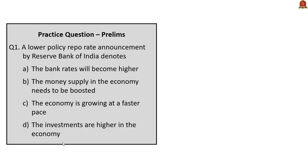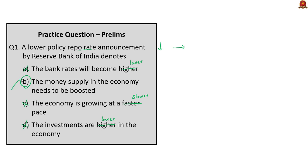The first practice question: a lower policy repo rate announcement by RBI denotes which of the following? When the policy repo rate is reduced, bank rates also become lower. The RBI reduces the repo rate because the economy is growing at a very slow pace and money supply and investments are on the lower side. The correct answer is option B: the money supply in the economy needs to be boosted. When the bank reduces bank rates, money supply in the economy can be boosted.